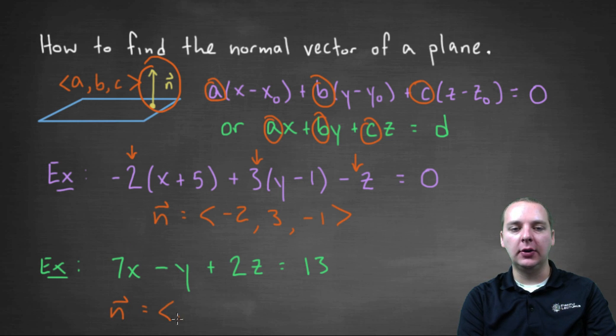Hopefully you can. I think it would be the vector 7, comma negative 1, comma 2. So really you just look at the coefficients of x, y, and z. And that will be one of the vectors that's normal to your plane.